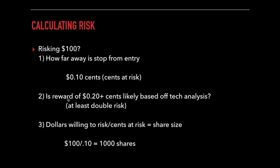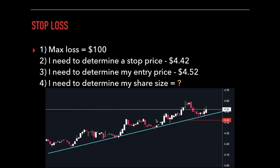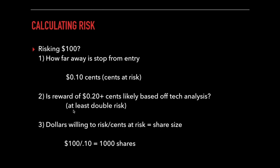Step two is determining whether a reward of $0.20 is likely based on technical analysis. You'll need to do a bit more analysis, looking at the chart to figure out if this stock may have the juice to get up $0.20. Judging by what this stock has done in the past, it could go up $0.20, if not at least $0.10. Knowing the stock may offer at least a 1-to-1 risk-reward ratio, or better a 1-to-2 where the reward is double what we're risking, makes for a good trade.